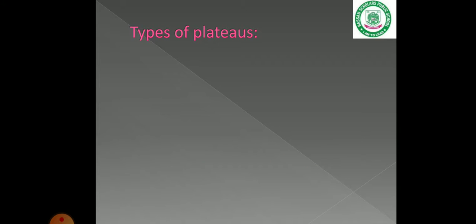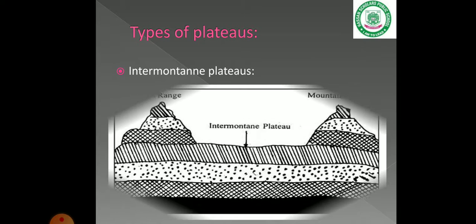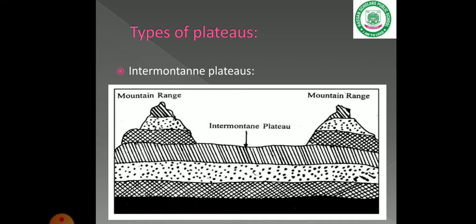Now let's look at the types of plateaus. The first type is inter-mountain plateaus. These are plateaus that are surrounded by mountain ranges on both sides — mountains on either side with the plateau in between.